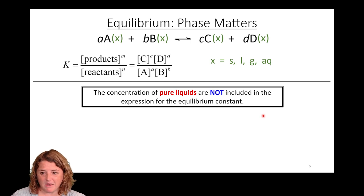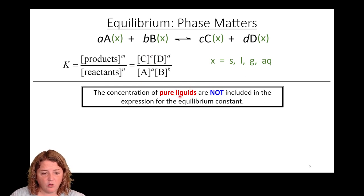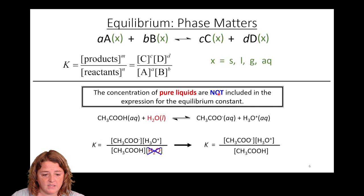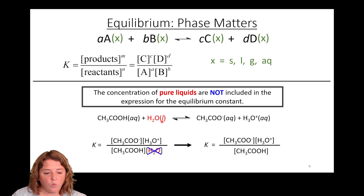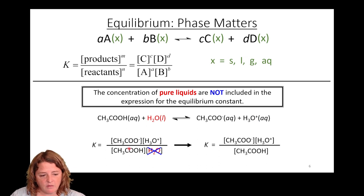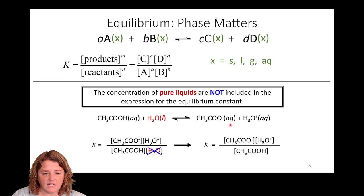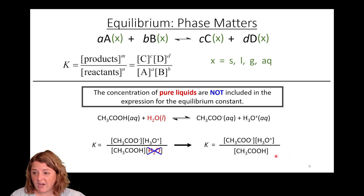Worth noting — and I'll say the same thing I said in the last video — we are going to assume that pure liquids and pure solids are not included in the expression for the equilibrium constant. So if you had acetic acid reacting with water to yield acetate and hydronium, I'd set up my equilibrium constant expression with my products — acetate and hydronium — divided by my reactants — acetic acid and water — but water is a pure liquid, so we just ignore it.